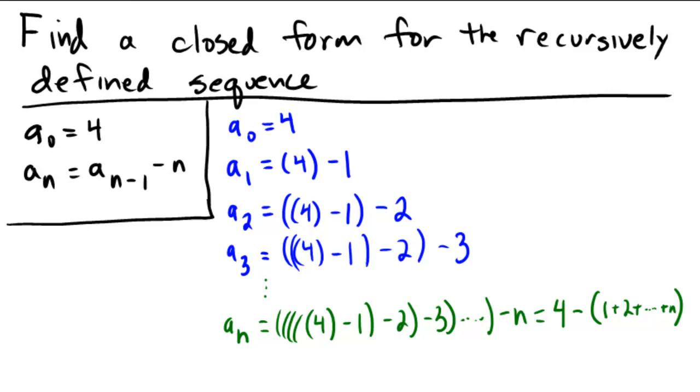So that means our recursively, or our closed form, can now be determined. The closed form for a sub n is going to be 4, because I have to have that at the beginning, minus the sum of 1 through n, and as we discussed in class, that is n times n plus 1 over 2.